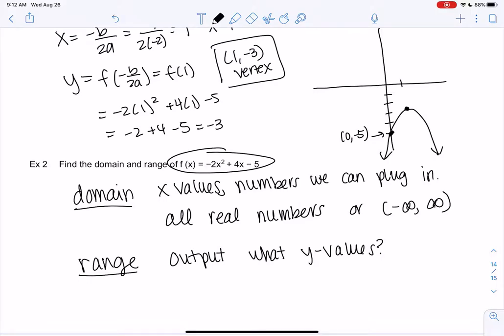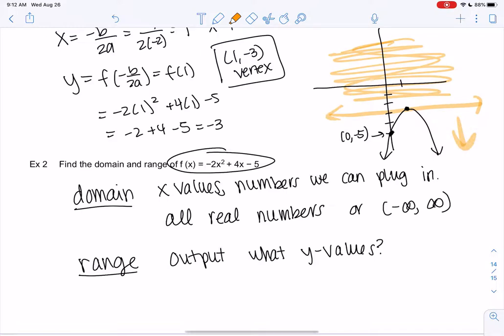So this is why we need the graph. The graph tells me that the y values are not all real numbers. If you look up here, none of those y values are happening. So we're just going to use the graph to see that the largest y is negative 3, from the vertex. And it's anything smaller. So y is negative 3 or smaller from the graph.